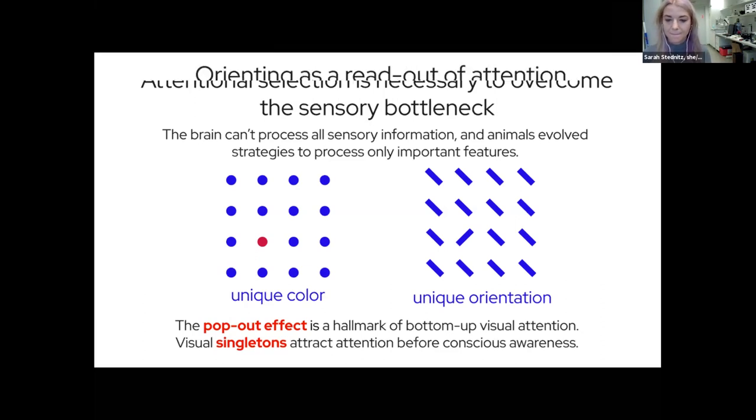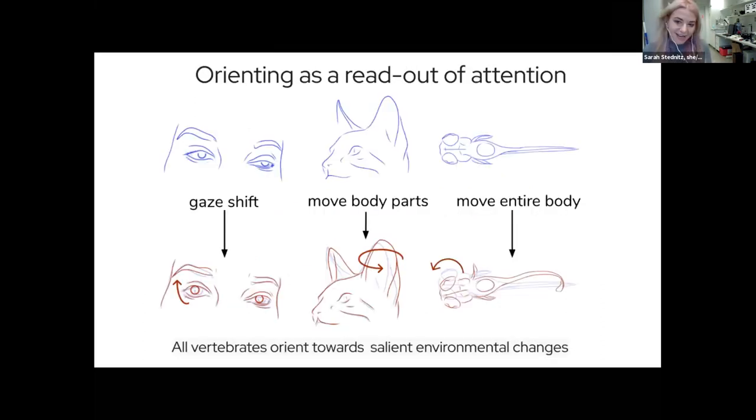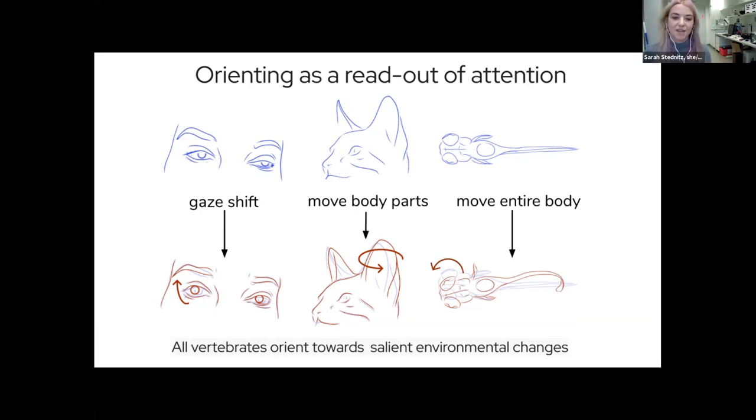What does that actually look like as a behavioral readout? We call it orienting. It takes many different forms. In humans you might have a gaze shift. When I switched to that slide with the single red dot, you probably looked at the dot before I even began speaking. Other animals might move their body parts, like a cat could rotate its ear towards something in the environment.